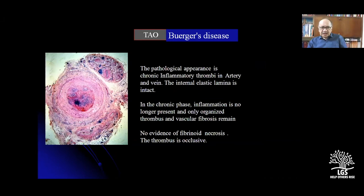Thromboangitis obliterans (TAO) is a rarer condition involving inflammation of both the artery and the vein, with thrombosis and obliteration of the arteries. Inflammatory thrombi occur in both the artery and vein. On histomicroscopic assessment, the internal elastic lamina is absent, and thrombosis is present in the clots in the artery and the vein.